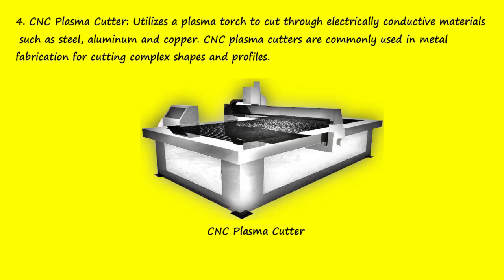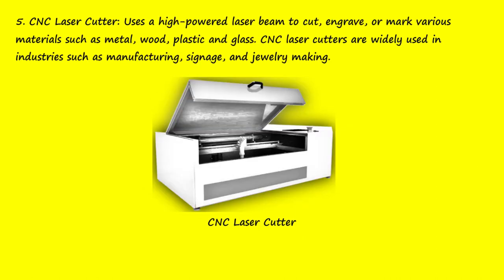4. CNC Plasma Cutter — utilizes a plasma torch to cut through electrically conductive materials such as steel, aluminum, and copper. CNC plasma cutters are commonly used in metal fabrication for cutting complex shapes and profiles.